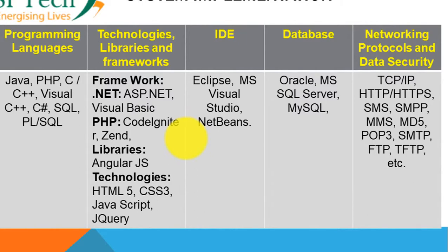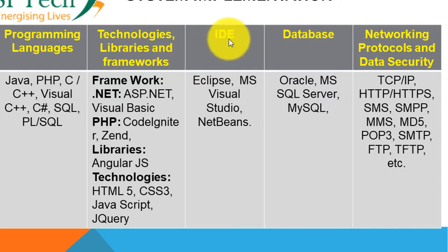Once user acceptance testing is completed successfully, the project is considered complete and goes into maintenance mode. When talking about system implementation, you are supposed to write one chapter in your project report on it. System implementation basically means converting the system design document into the actual working model or working software.